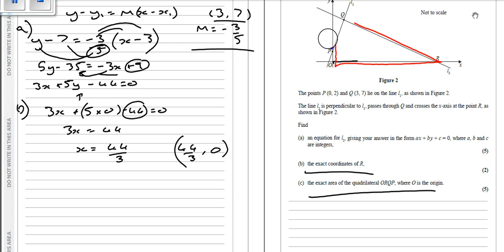So what we need to do to work out the area of the triangle is work out where L2 crosses the y-axis up here. Because we know that it goes through at 44 over 3 there. So to find out where it goes through the y-axis, we make x equals 0. So we're going to have 0 plus 5y minus 44 equals 0. So y equals 44 over 5.